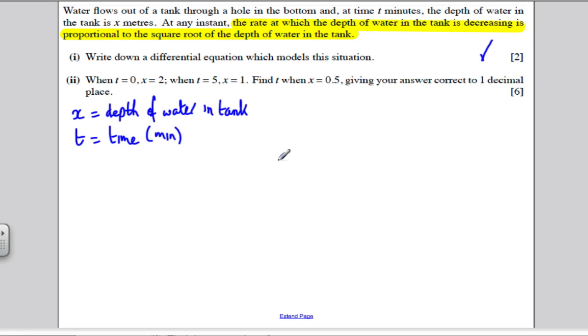It tells us that the rate at which the depth of the water in the tank is decreasing, so the rate of change of the depth of the water over time, is proportional to the square root of the depth of the water. Because it's decreasing, it's proportional to the negative of the square root of the depth of the water.